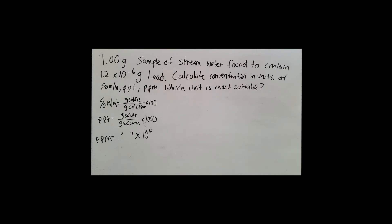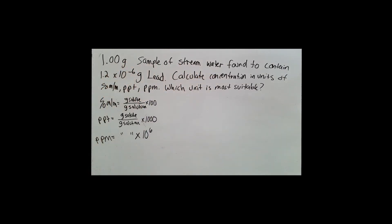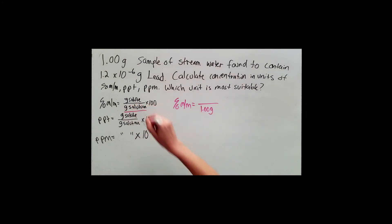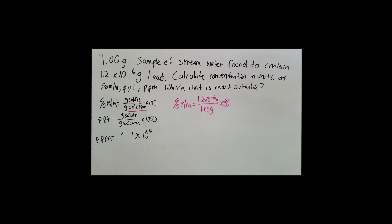Which of the two given numbers is our solution? The one gram sample of stream water is the solution as a whole — it contains water and all its components including the solutes. That one gram goes in the denominator as grams of solution. In the numerator goes grams of solute — the lead — which is 1.2 × 10⁻⁶ grams. For mass percent, I multiply that by 100.